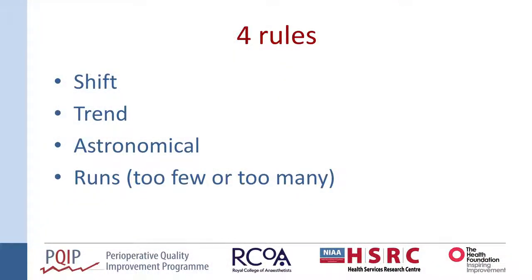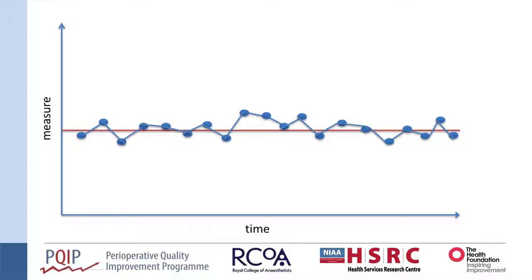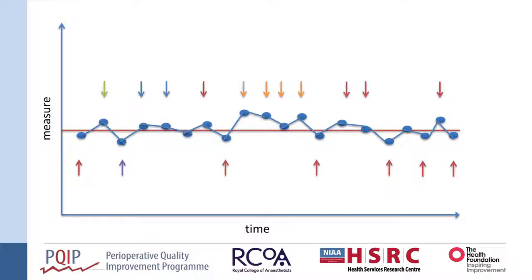The last rule is the least intuitive: too few or too many Runs. A run is a group of data points on one side of the median line — it might be just one data point, which is still one run, or two or three together. The easiest way to count runs is to count how many times your line crosses the median line and subtract by one. You then look up the number of runs compared to total data points on specific tables, which we have on the PRISM website.